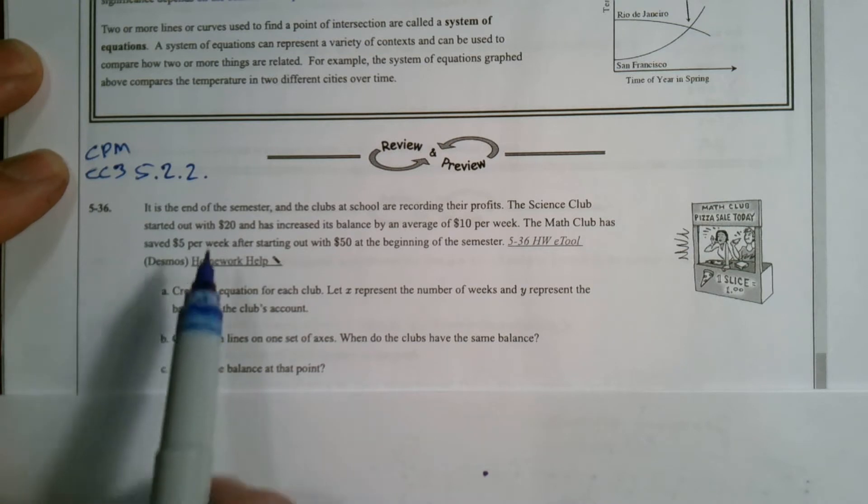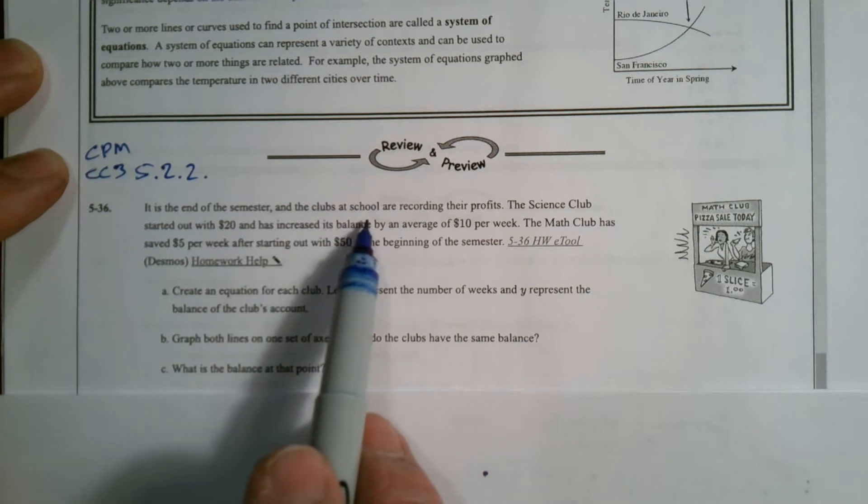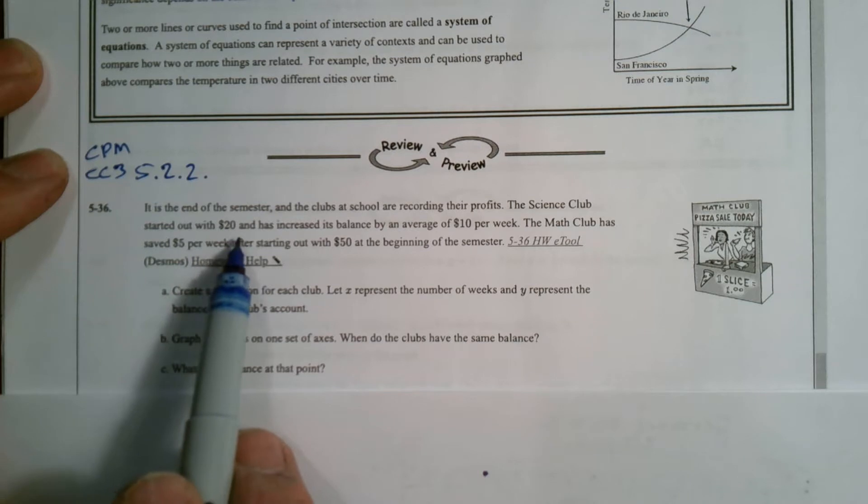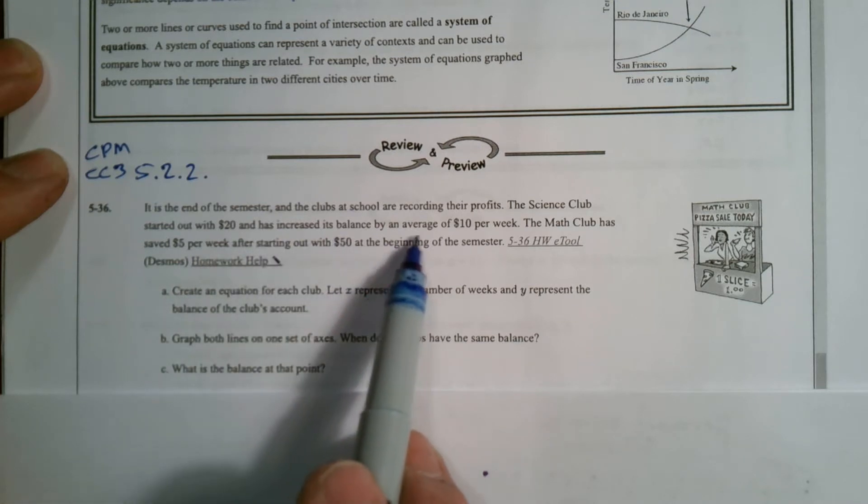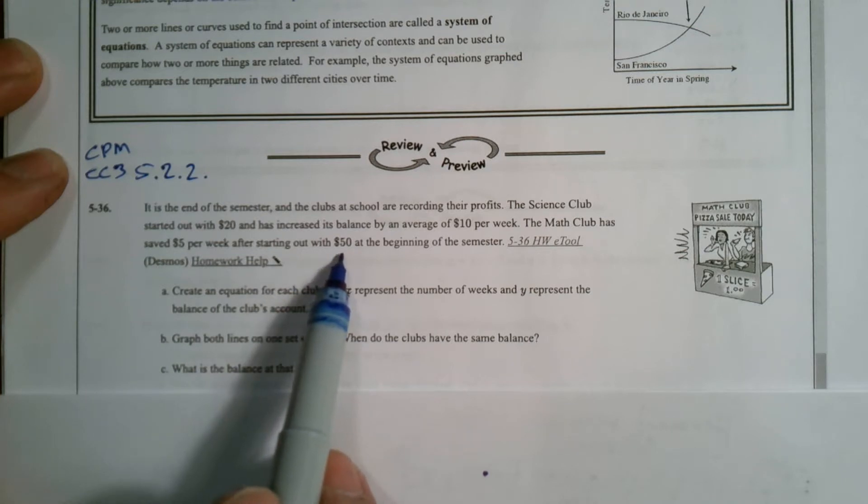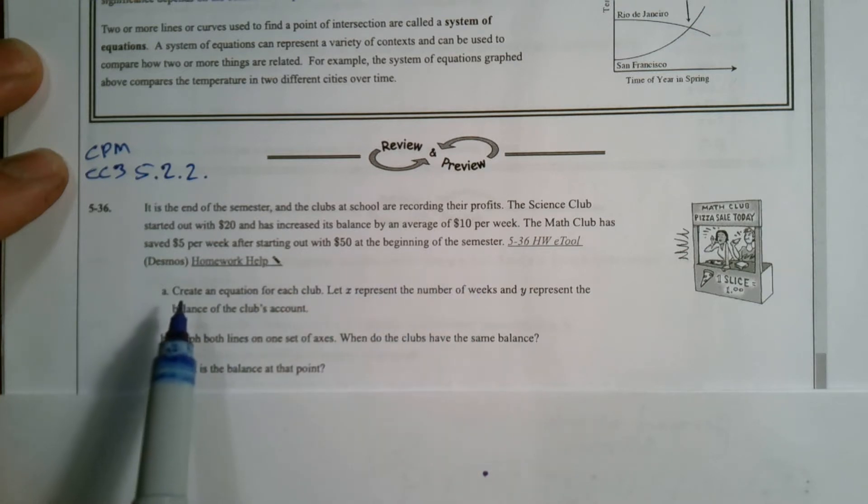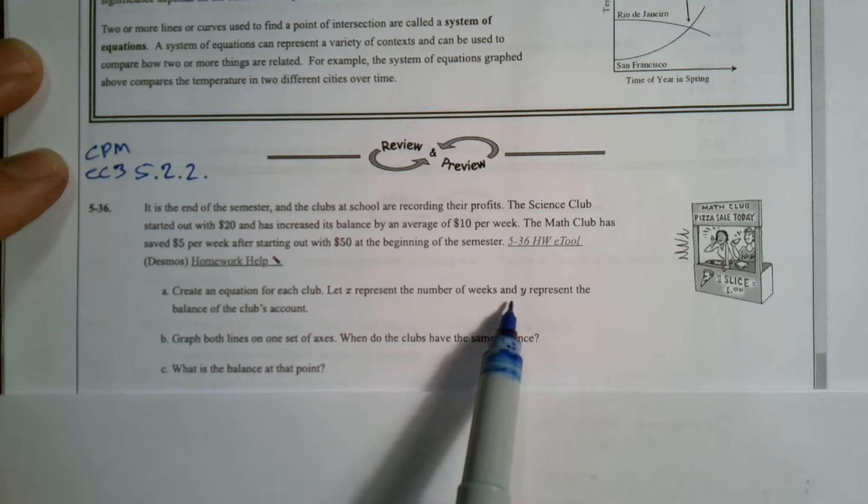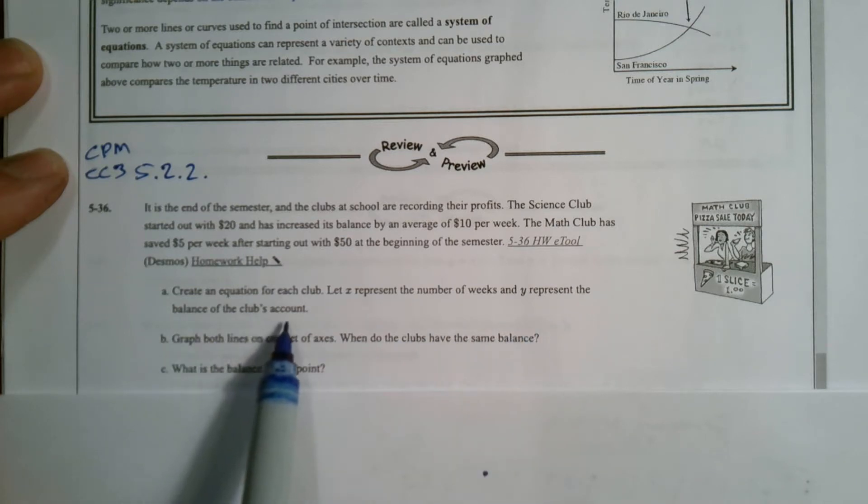Let's read the question and we'll go through the process. It is the end of the semester and the clubs at the school are recording their profits. The Science Club started off with $20 and has increased its balance by an average of $10 per week. The Math Club has saved $5 per week after starting off with $50 at the beginning of the semester. It wants us to create an equation for each club, let X represent the number of weeks, and Y represent the balance of the club's account.